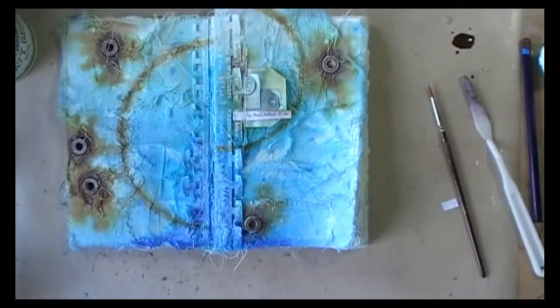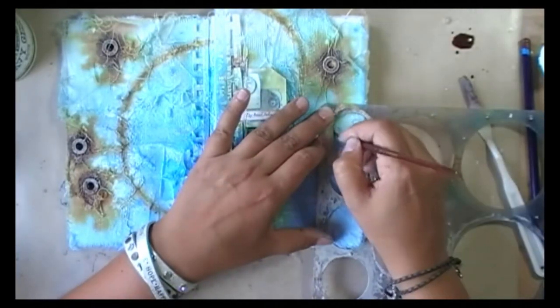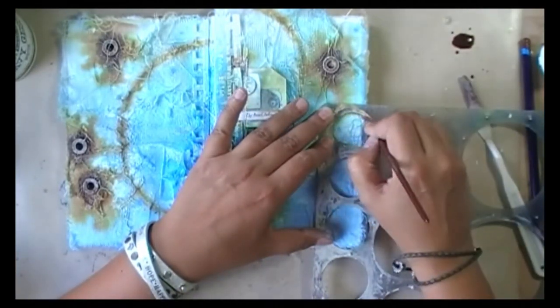I needed something more on that right down corner, so I'm just adding some more rusty circles in the same way.